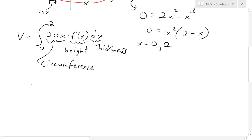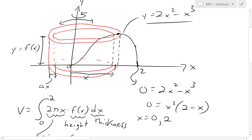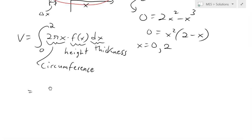So now we could plug these in. This f of x, that's just our y function, which is this right here. So plug that all in. We'll get integral from 0 to 2 of 2 pi x times 2x squared minus x cubed dx.